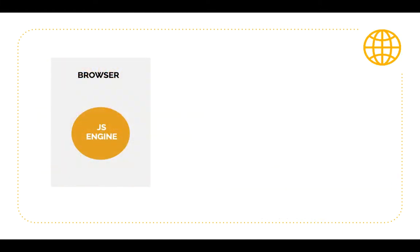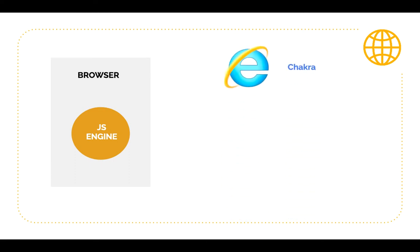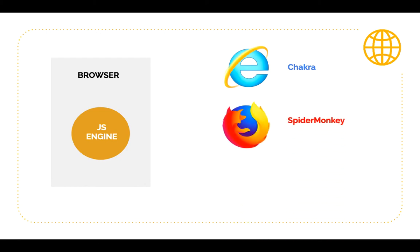Web browsers have a JavaScript engine to execute JavaScript code. For instance, IE's JavaScript engine is called Chakra, Firefox's JavaScript engine is called SpiderMonkey, and Chrome's JavaScript engine is called V8.